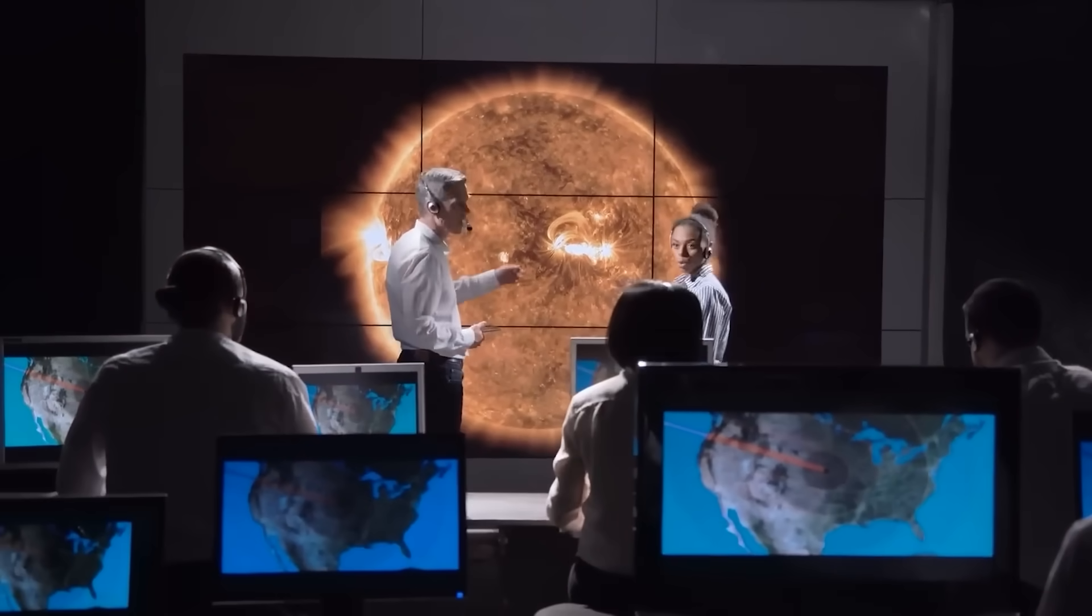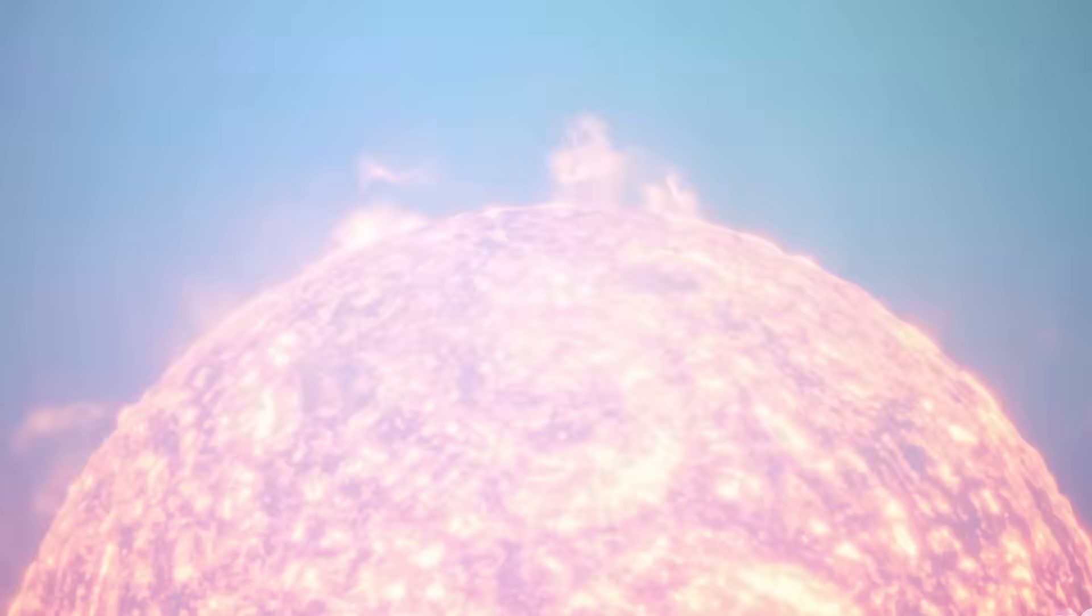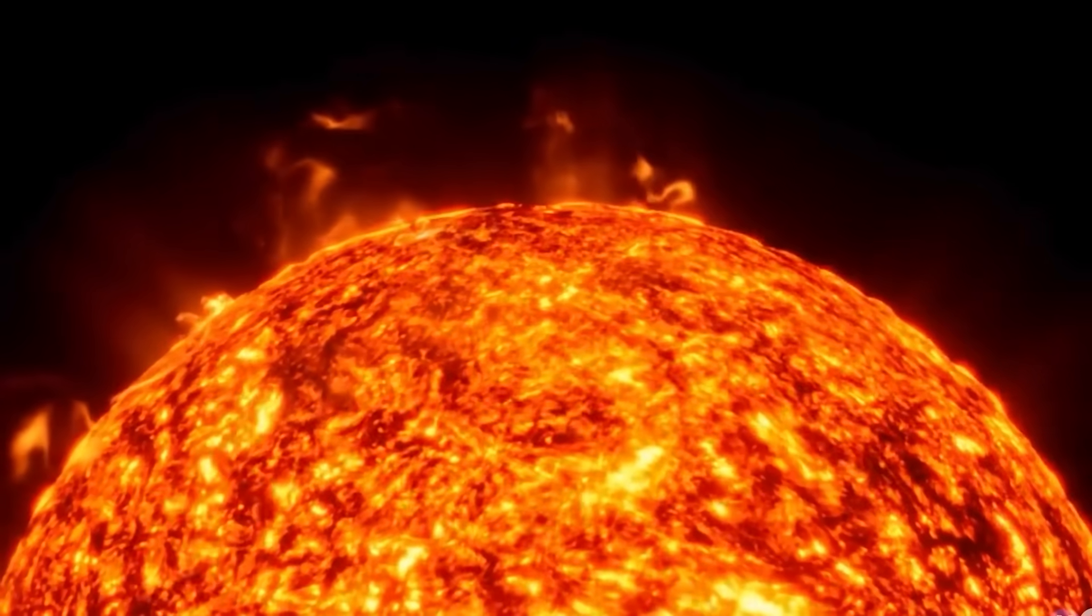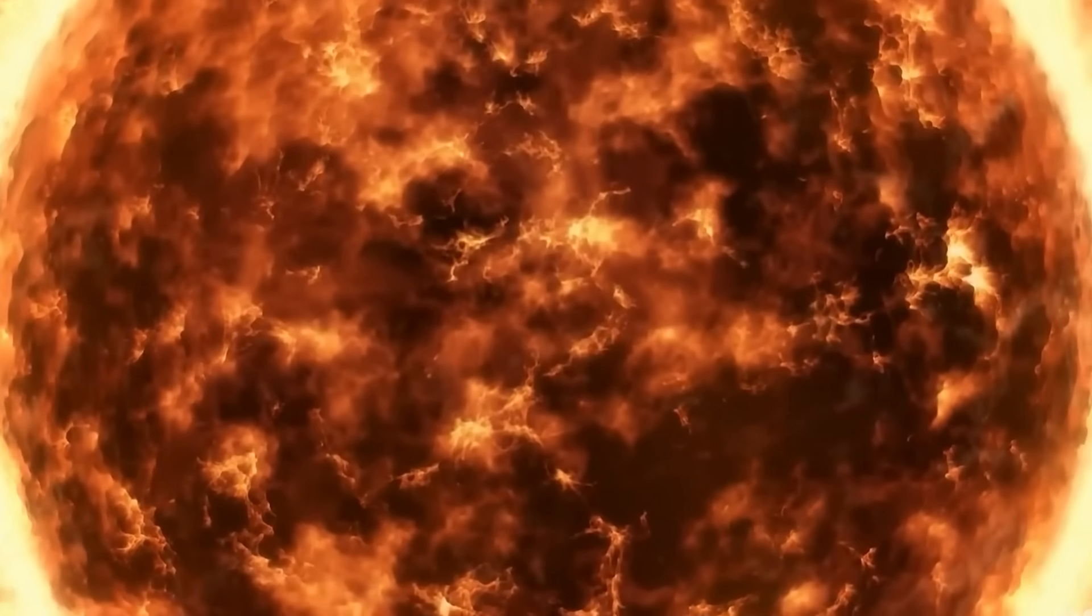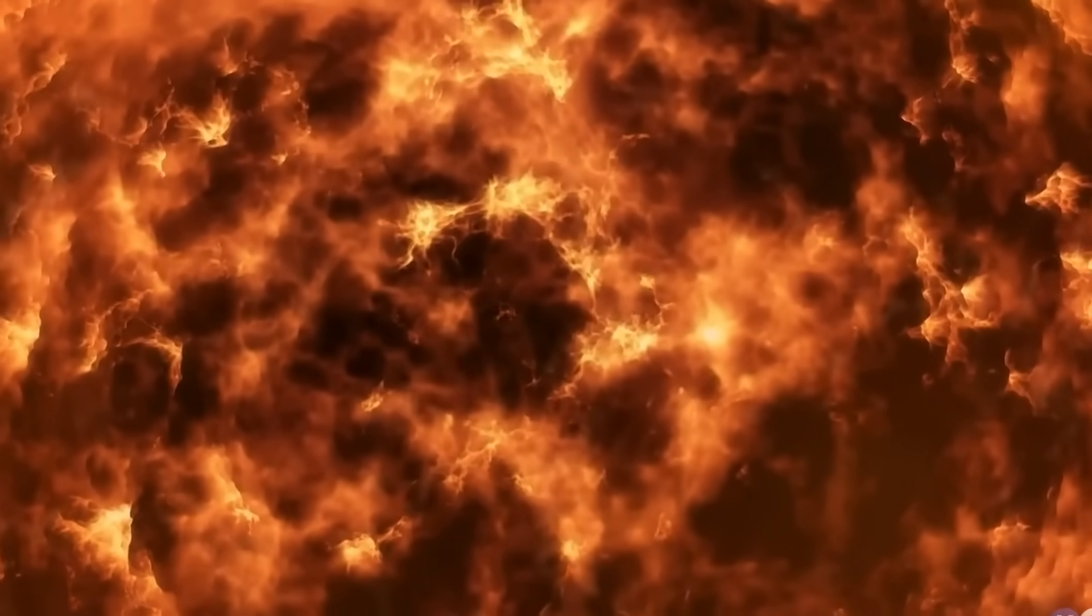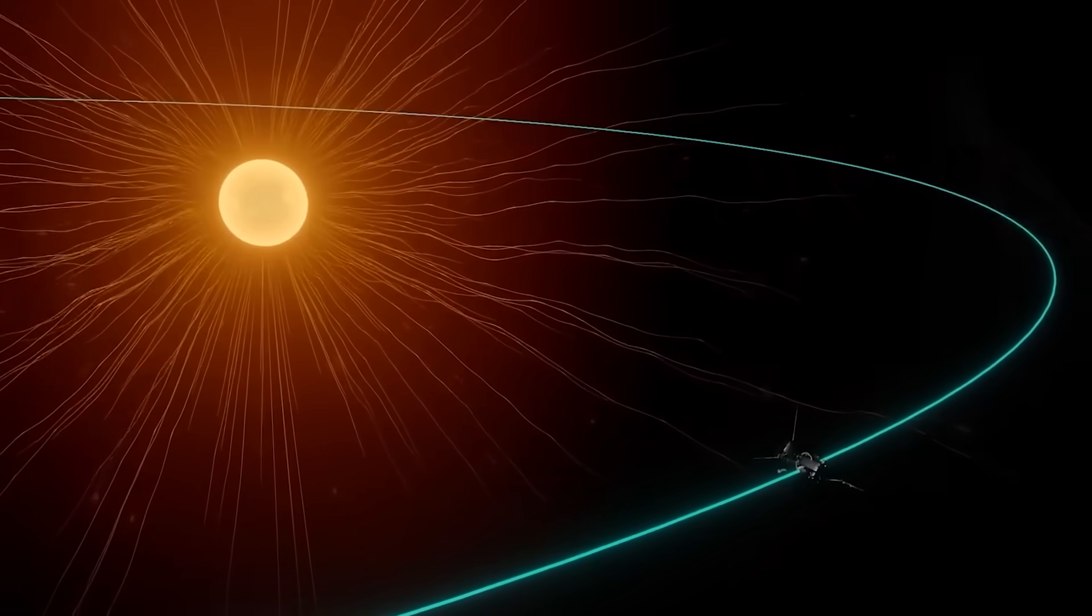One of the most shocking discoveries is the presence of switchbacks, strange zigzag patterns in the sun's magnetic field. These sudden reversals, never seen this close to the sun before, seem to be linked to massive bursts of energy. They may be the missing piece in the puzzle of how the corona stays so hot, and how solar winds accelerate across space.